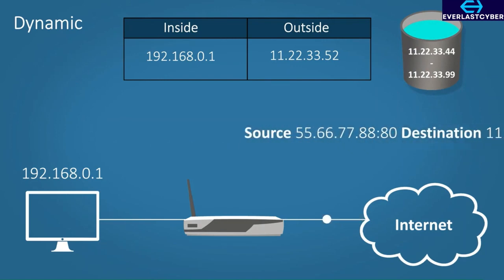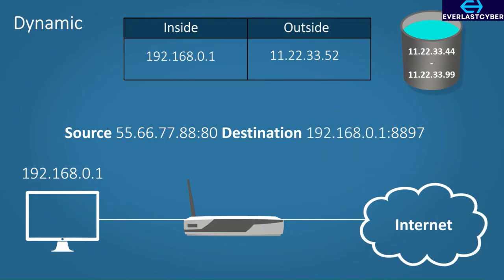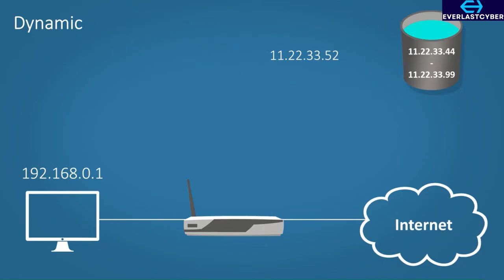When the data comes back, the router again looks at the source address and then the destination address. If it finds a match in the NAT table from the destination address, it swaps it out for the private address. After this is done, the public address will return to the pool, ready to be used again.